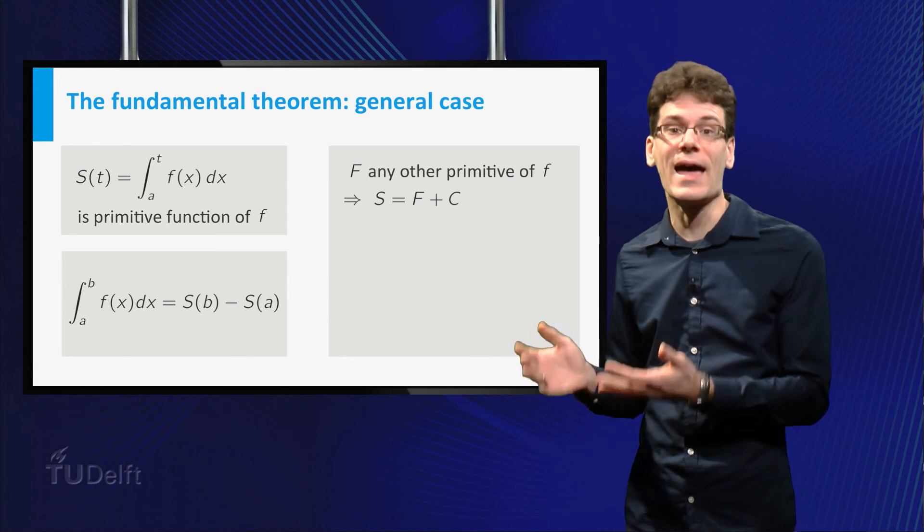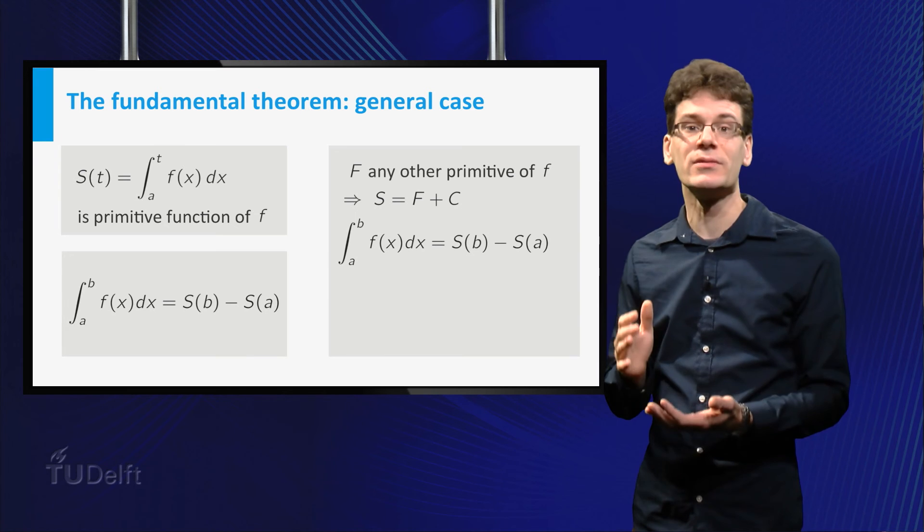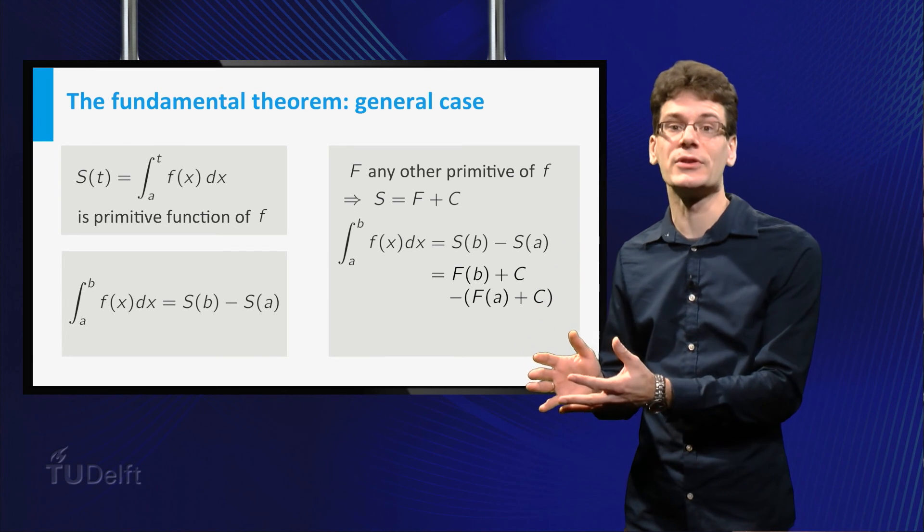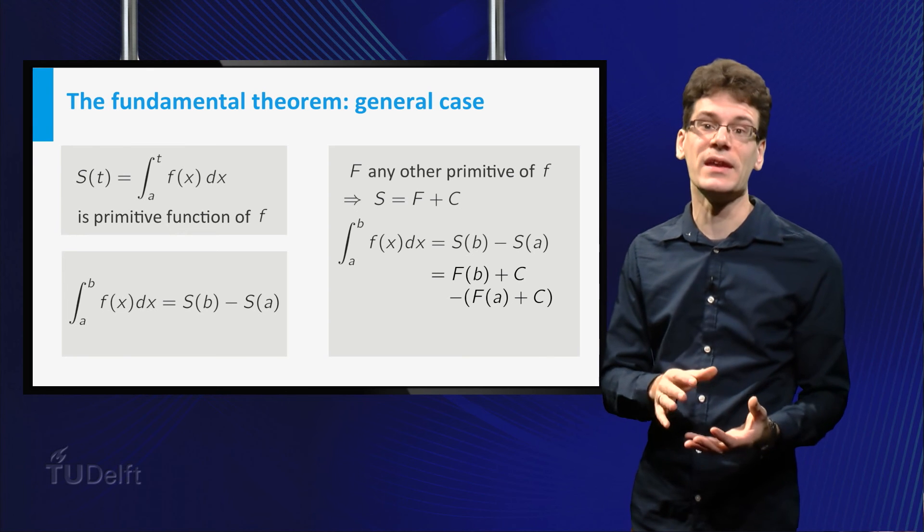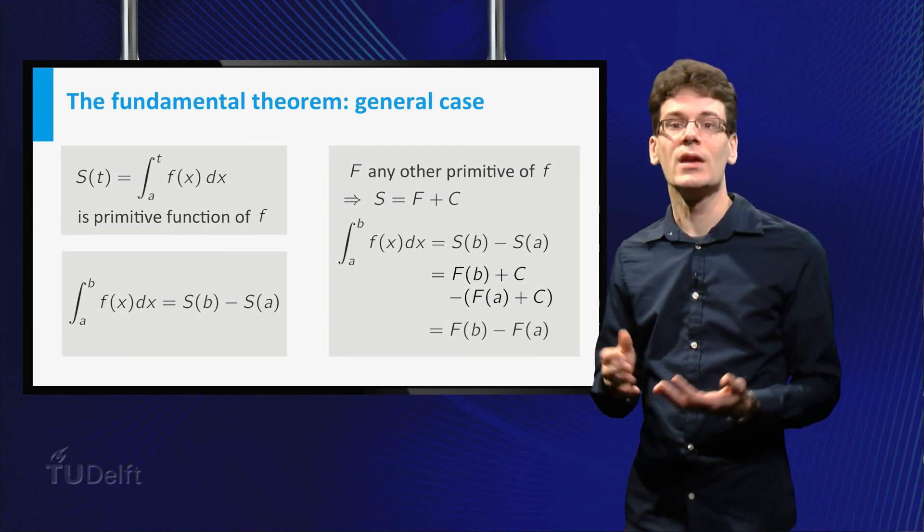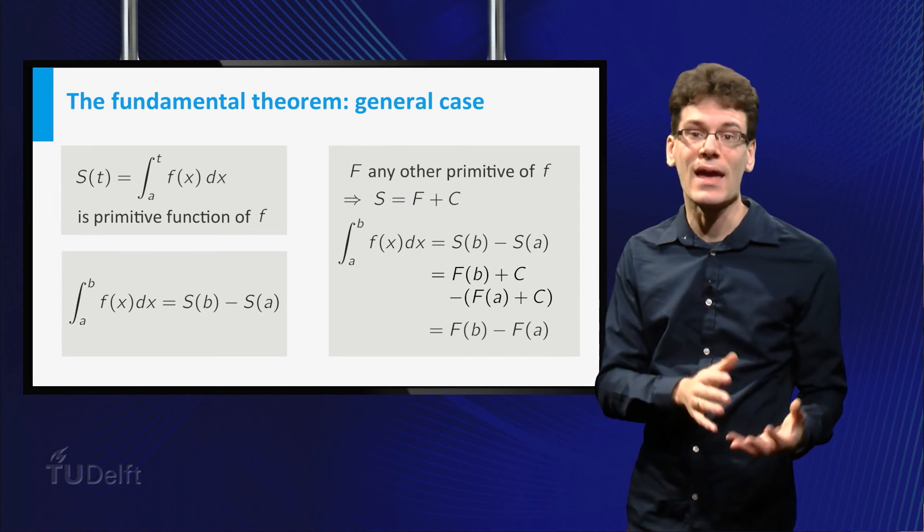So s equals F plus c. Now we can rewrite the expression that we just obtained. Replace s of a by F of a plus c. Replace s of b by F of b plus c and subtract. The c's cancel and we are left with F of b minus F of a.